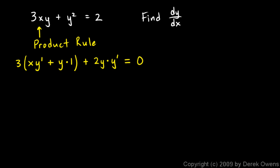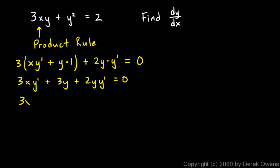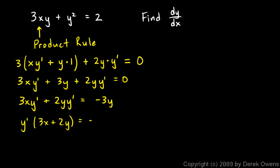From here it's just basic algebra — I'm trying to find dy/dx, which is simply y prime, which shows up in two places, so I just need to algebraically solve for y prime. Distributing the 3 gives: 3x times y prime plus 3y plus 2y times y prime equals 0. Collecting y prime terms on one side gives 3x·y prime plus 2y·y prime equals negative 3y. Then factoring out y prime: y prime times (3x plus 2y) equals negative 3y.